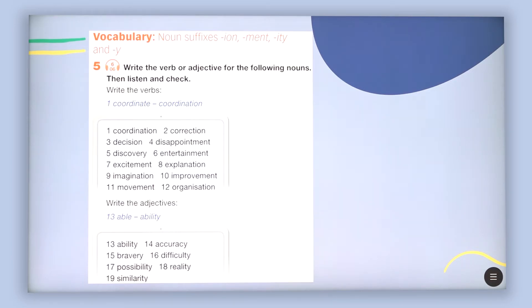And then you've got also the adjectives. For example, able and the noun created is ability. Then you've got accuracy, bravery, difficulty, possibility, reality and similarity. So the adjectives that are created can be brave, difficult, possible and so on.